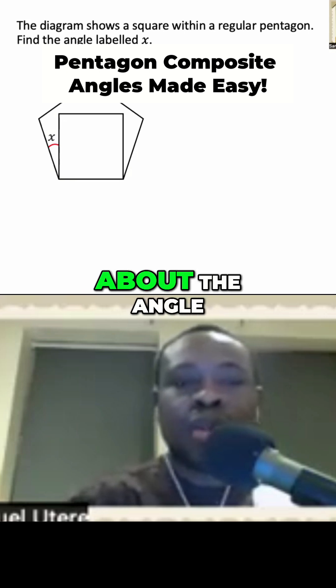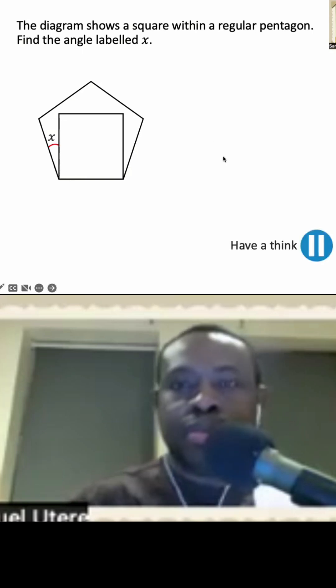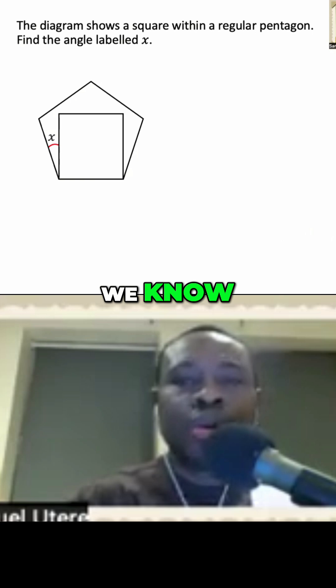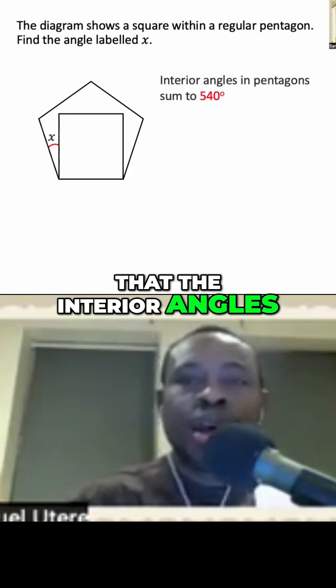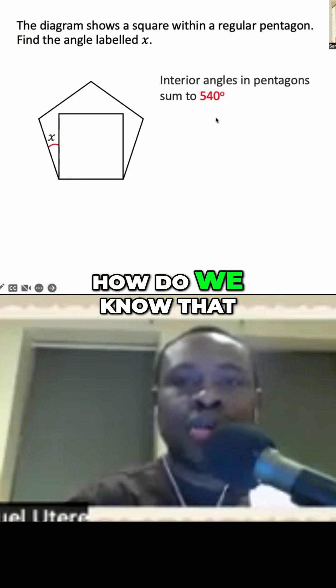What do you know about the angle X and this other angle here? Well, we know that the interior angles in the pentagon sum to 540 degrees. How do we know that?